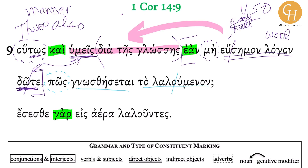That which is being spoken — how will it be known? We've been seeing this verb gnosthesetai — this is from ginosko, 'to know.' It's a future passive third singular indicative form. So 'how will that which is being spoken be known?' Good question. How will it be known?